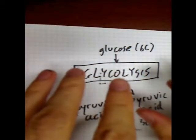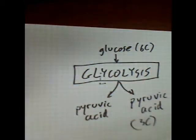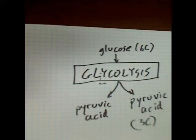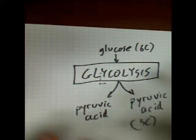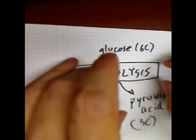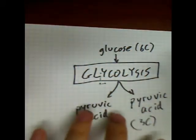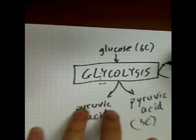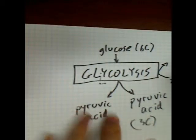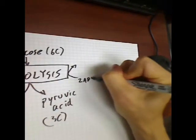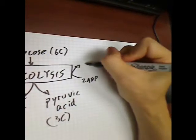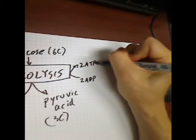When you break a carbon-carbon bond, the energy that was in that bond is released. The whole set of processes — glycolysis — is able to use that energy to make some high-energy molecules. In this case, we get to take two ADPs and turn them into two ATPs.